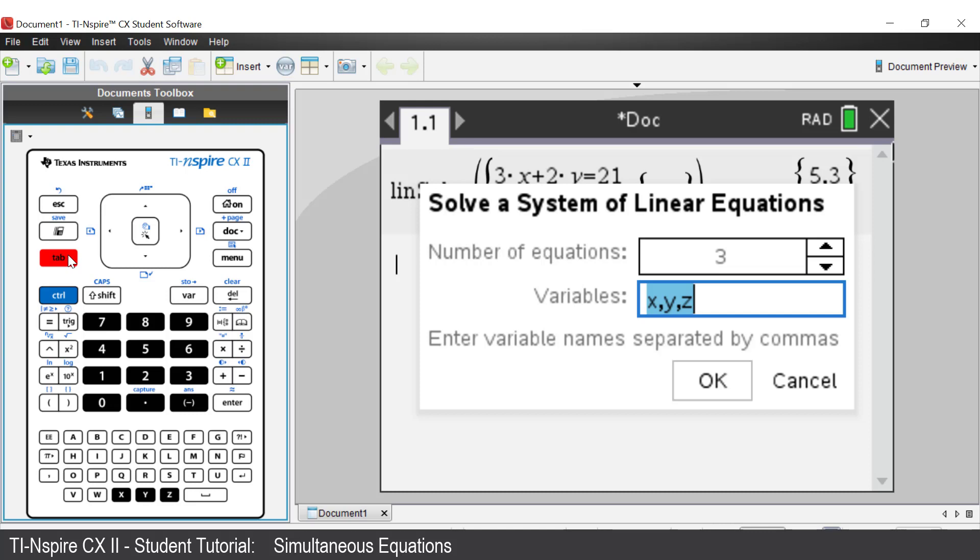We will be using the variables A, B and C. The comma key is on the bottom left hand corner of the calculator. Enter A and then making sure there is a comma between the variables, enter B, C.